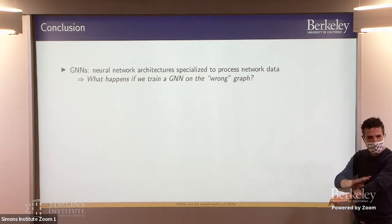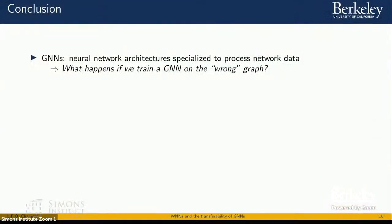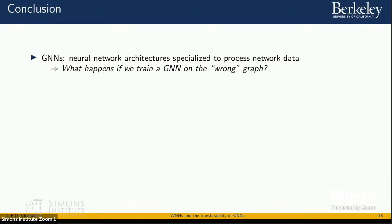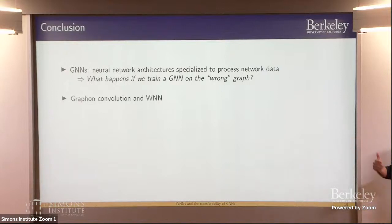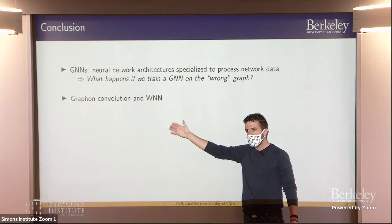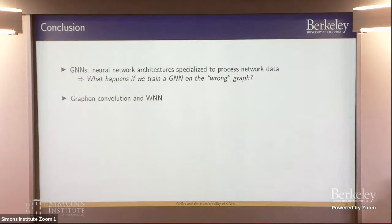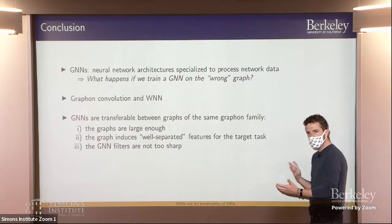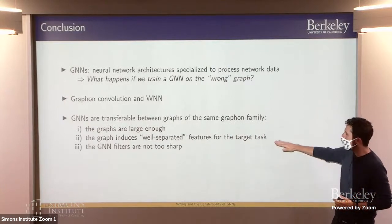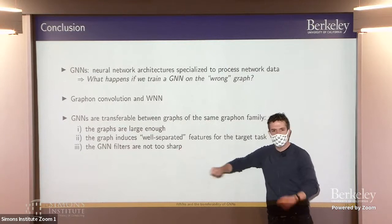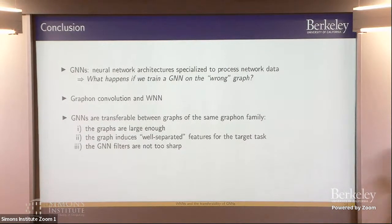To wrap up: we explained where graph neural networks come from as a generalization of convolutional neural networks for network applications. The question was what happens when training and testing on different graphs. To answer it, we built limit objects — graphon convolutions and graphon neural networks — and obtained a result showing that GNNs are transferable between different graphs in practice and in training, as long as the graphs are large enough and the spectral features are well separated for the task.